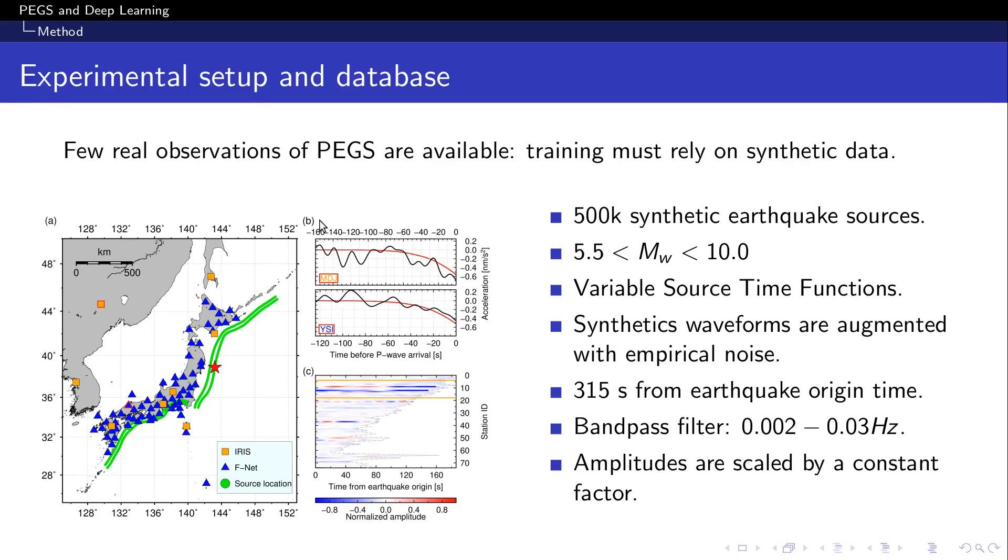To these synthetic waveforms, we add empirical noise, so noise that actually is being recorded at seismic stations to simulate more realistic waveforms. These are an example of what the waveforms look like for an example of an 8.9 magnitude earthquake.